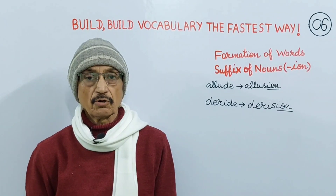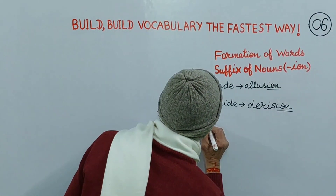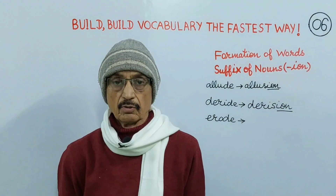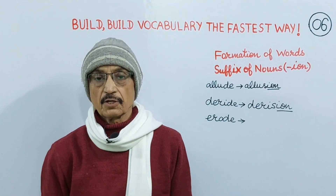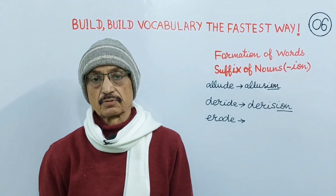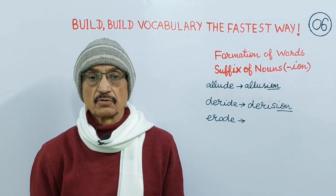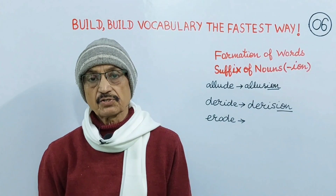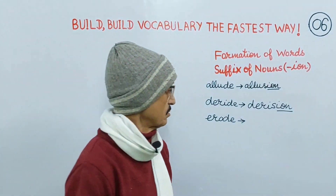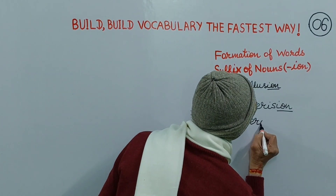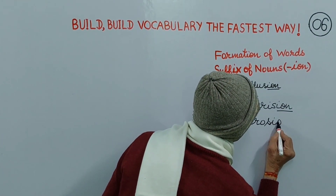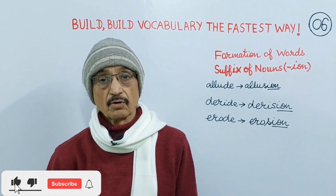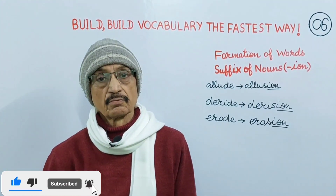Next comes erode. Erode means to diminish, to destroy, to frazzle. When we take suffix I-O-N, it changes into its noun — erosion. Erosion means the process of eroding, disintegration, attrition.